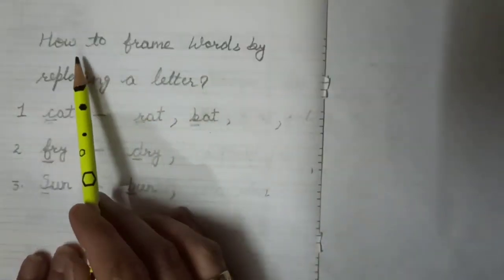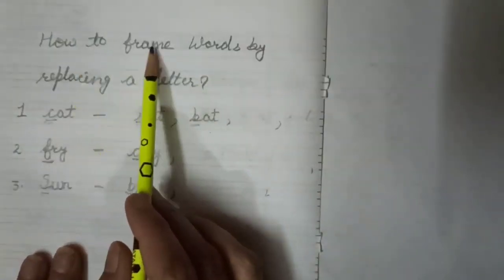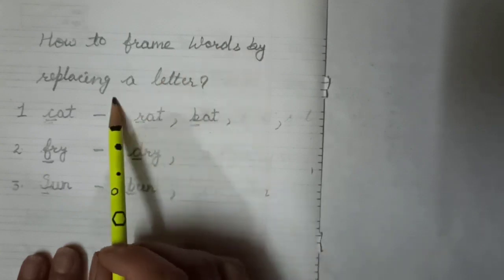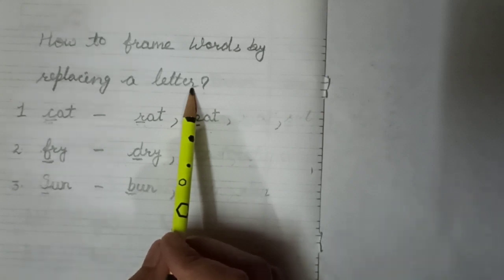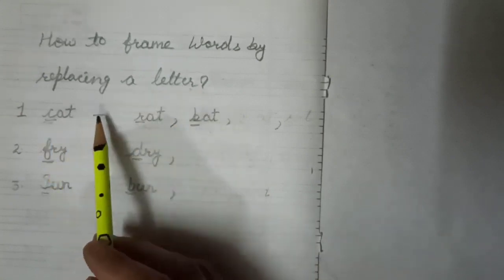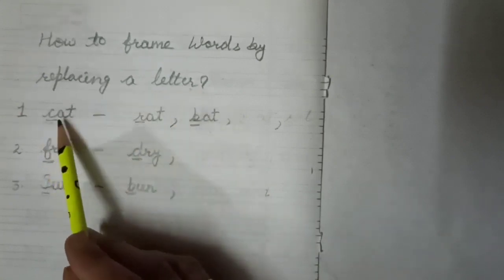Now the next topic: how to frame new words by replacing a letter. A, B, C, D are letters or alphabets. With the help of these letters we frame words. Like cat — C, A, T. If we replace letters, we can make a new word.